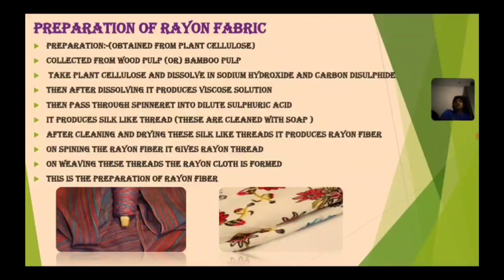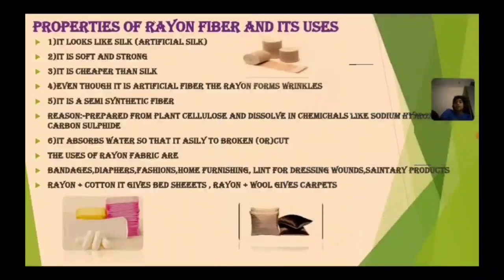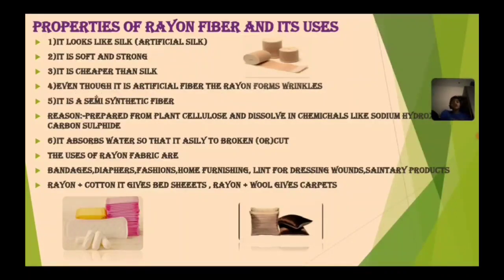This is the preparation of rayon fabric — by spinning, weaving, and mixing chemicals. The spinneret plays an important role in synthetic fibers, as it is used in the preparation of every synthetic fiber. Rayon looks like artificial silk — it is soft and strong, and cheaper than silk. Even though it is an artificial fiber, rayon forms wrinkles. It is a semi-synthetic fiber.